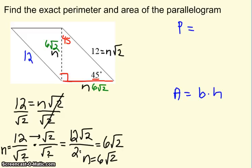Well, I think there's one other side that's 6 root 2. Remember how the left and right side of the parallelogram were both 12? Well, the top and the bottom are going to be the same as well. Since the bottom is 6 root 2, the top is going to be 6 root 2.